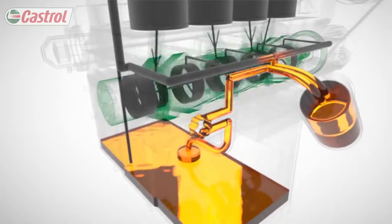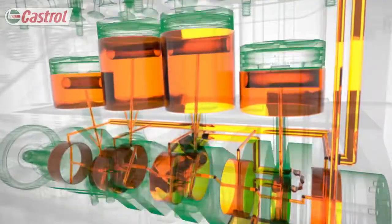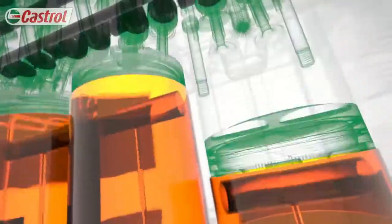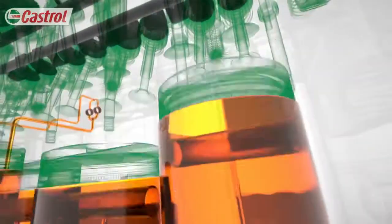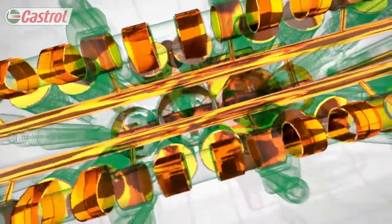Clean oil flows to all the critical engine parts. The bearings, supporting the crankshaft on a continuous film of oil. Pistons, cooled down and kept clean by the oil's detergent action. And the valve train, protected by the oil's anti-wear system.